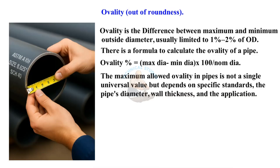The maximum allowed ovality in pipes is not a single universal value but depends on specific standards, the pipe's diameter, wall thickness, and the application.